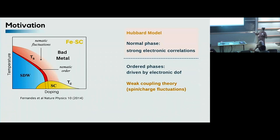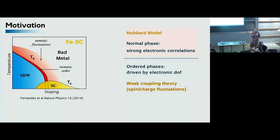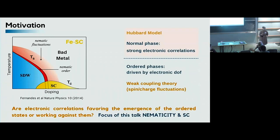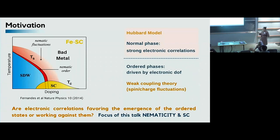We have well understood the phenomenology of the bad phase in terms of Hund's metal, and from the other point of view we can actually explain pretty well the emergence of the ordered phase using some weak coupling theory in which spin or charge collective modes are responsible for the emergence of these phases. You can think: okay, these are high-energy renormalizations that I can incorporate in this weak coupling theory with some effective mass or so on. But my point is that maybe this is not the whole story. My question is: are the correlations characterizing the bad metallic phase somehow favoring — or maybe not working against — the emergence of these ordered phases? So it's not just a renormalization; maybe there is a non-trivial interplay. In this talk I will focus on the effect of the bad metal properties on nematicity and superconductivity.